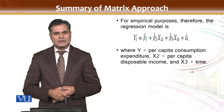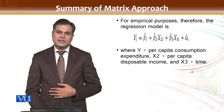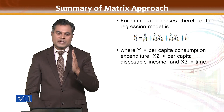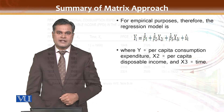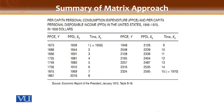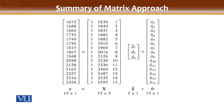I will share an example with you. In this example, you can observe the dependent variable y, with x2 as the first independent variable and x3 as the second independent variable — one dependent variable and two independent variables. In the matrix approach, we first need to convert this into matrix form.